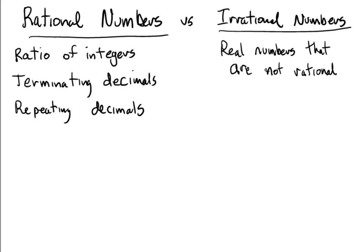So rational numbers, like their name implies, are ratios of particular types of numbers. In our case it's integers.